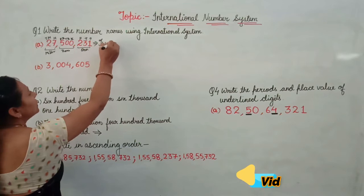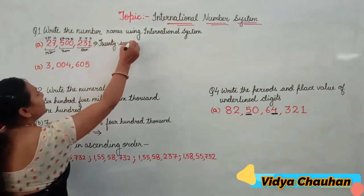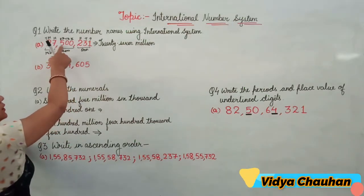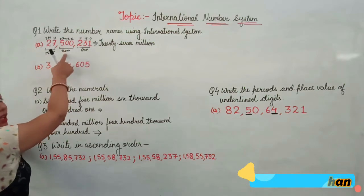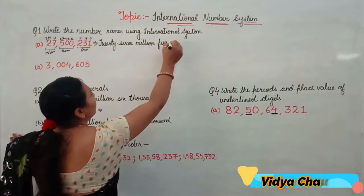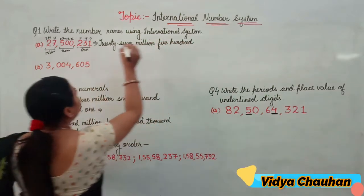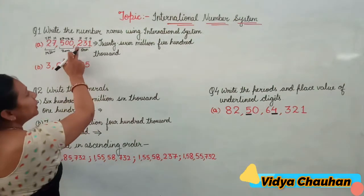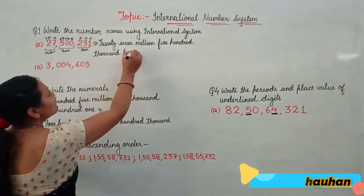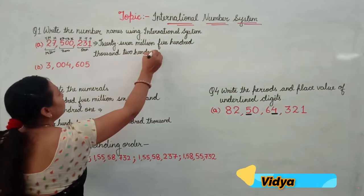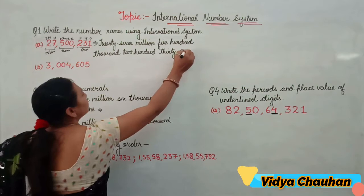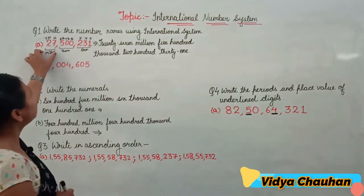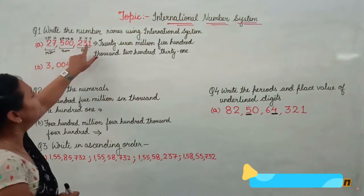It is 27 million. Then five hundred thousand — you read the number five hundred and it is in the thousands group, so five hundred thousand. Then six thousand. Moving to the next group: two hundred and thirty one. So the complete number name is twenty-seven million, five hundred six thousand, two hundred and thirty-one — that is 27,506,231 according to the international number system.